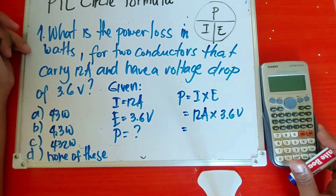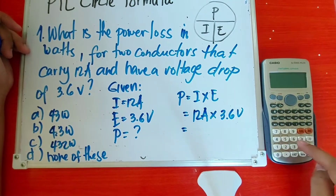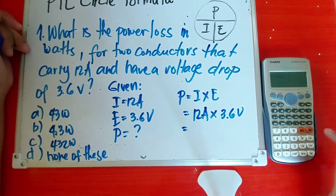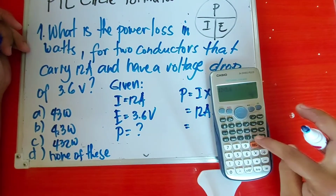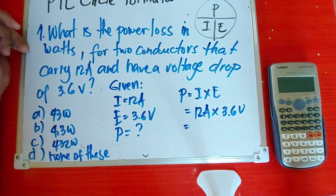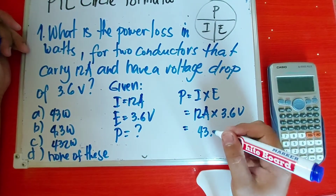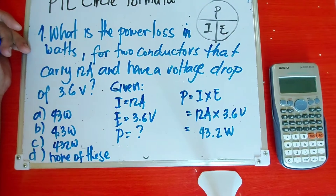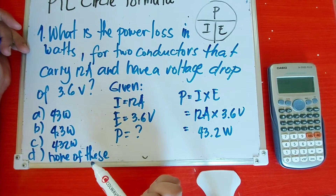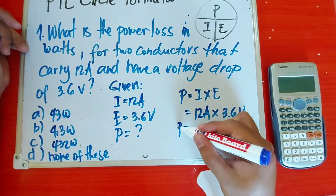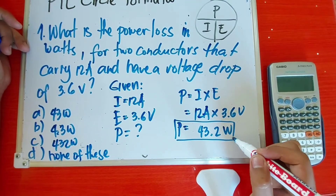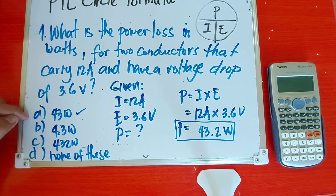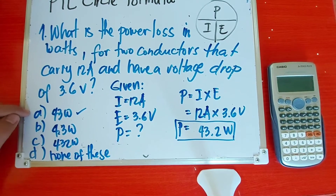So substitute na natin. I is equal to 12 ampere, then the voltage is 3.6 volts. So, 12 ampere times 3.6 volts — 12 times 3.6 equals 43.2. So, sa choices: 43, 4.3, 432, none of these — syempre, ang pipilin ay may pinakamalapit. So, 43 watts — ito yung pinakamalapit na sagot. Hindi siya nag-exacto, so kung ano yung pinakamalapit, yun yung sagot.